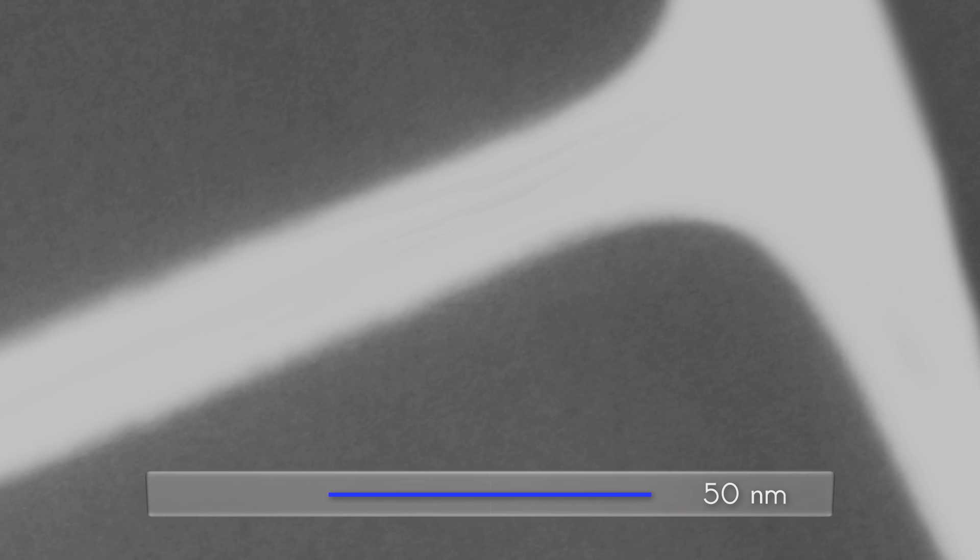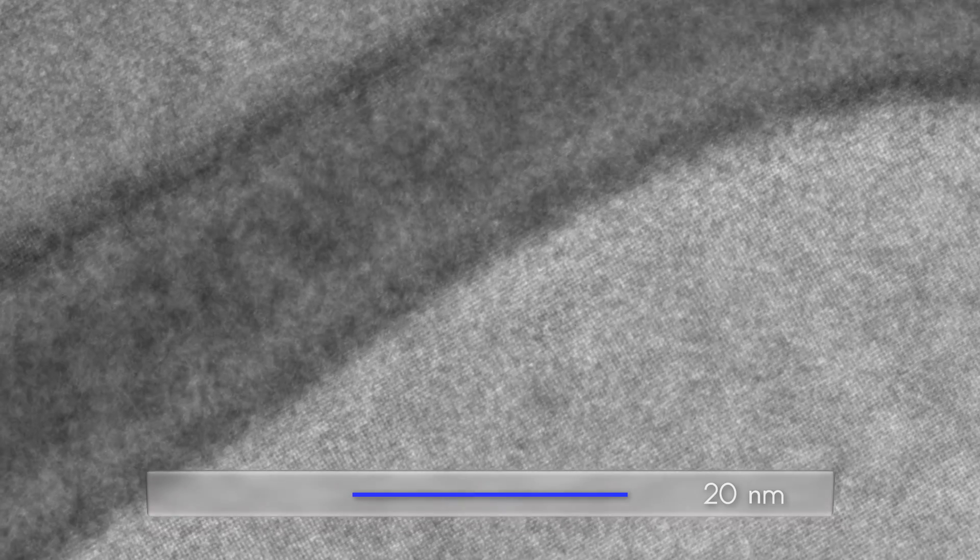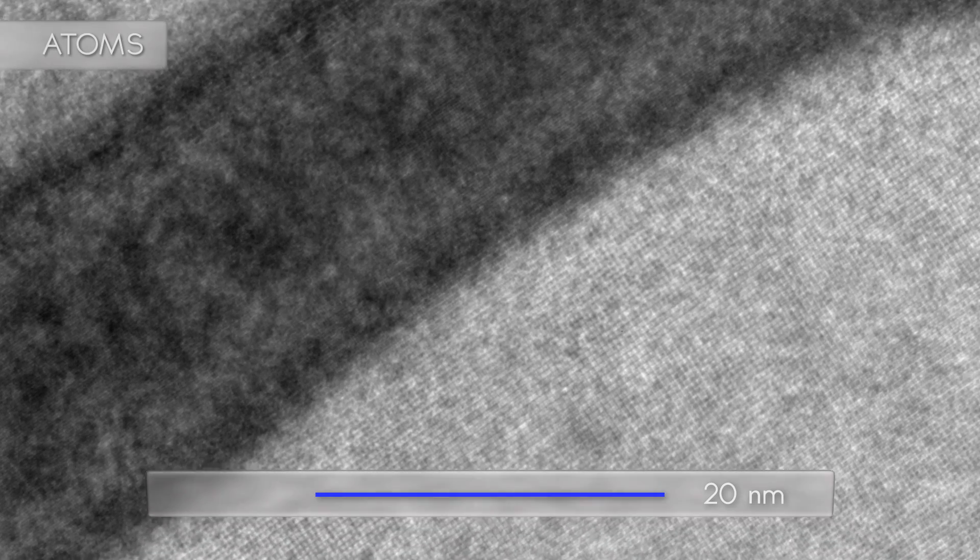We magnify even further and eventually start to see columns of atoms of our crystal. We can identify the interfacial region between the gamma and the gamma prime phase and we can in principle measure the distance between atoms and the angles which define the crystal lattice.